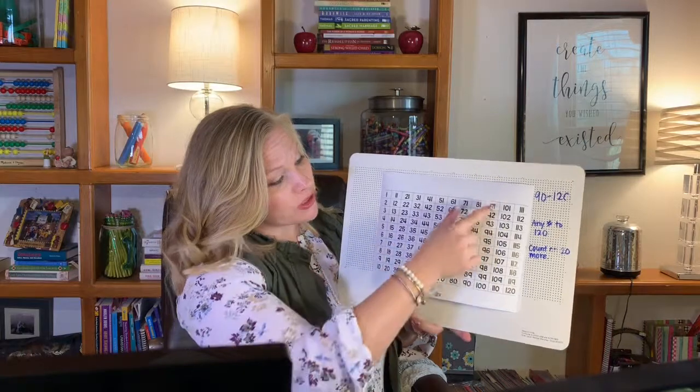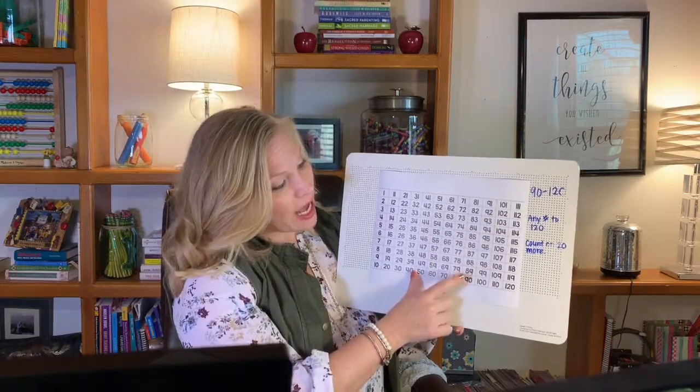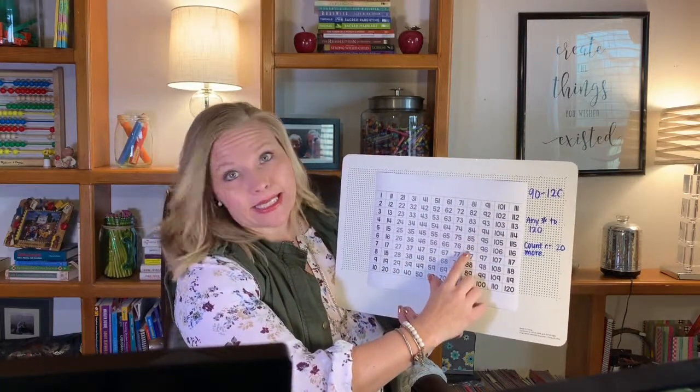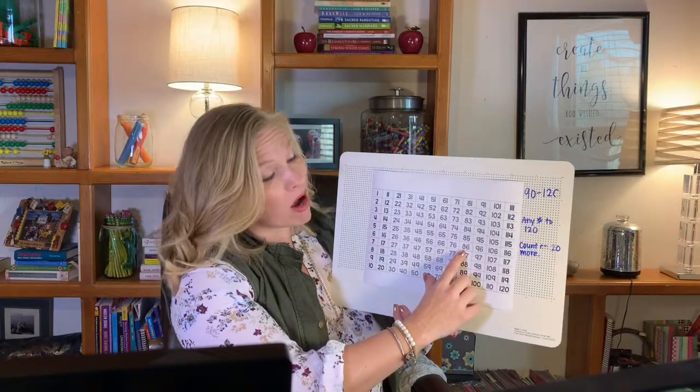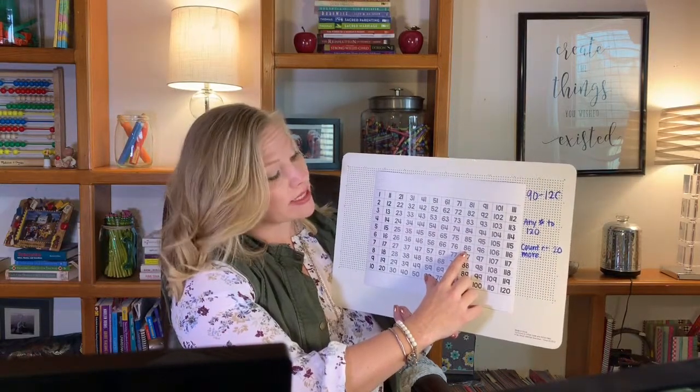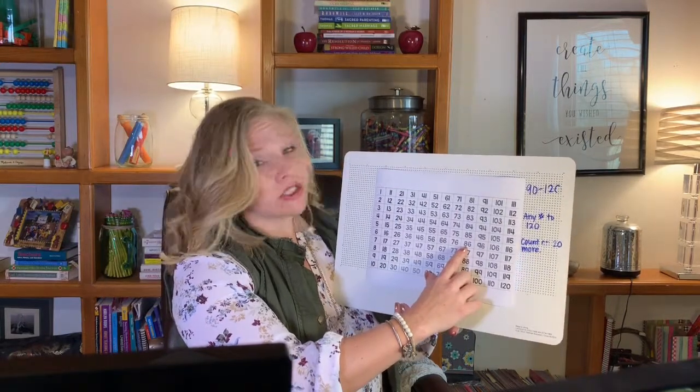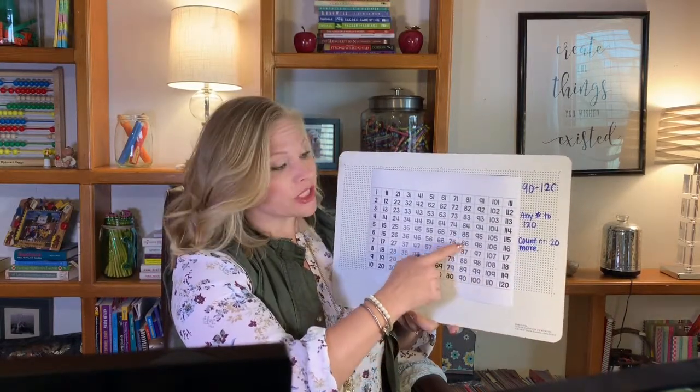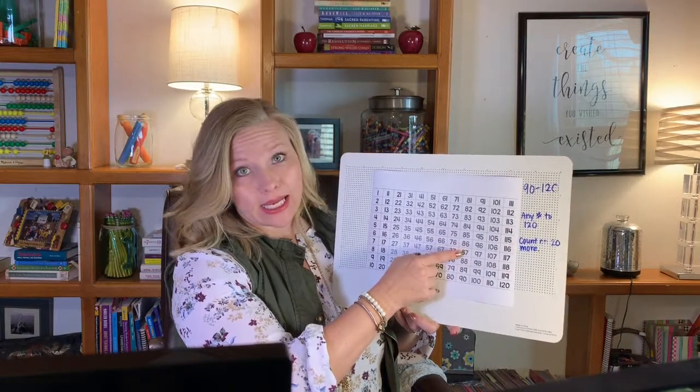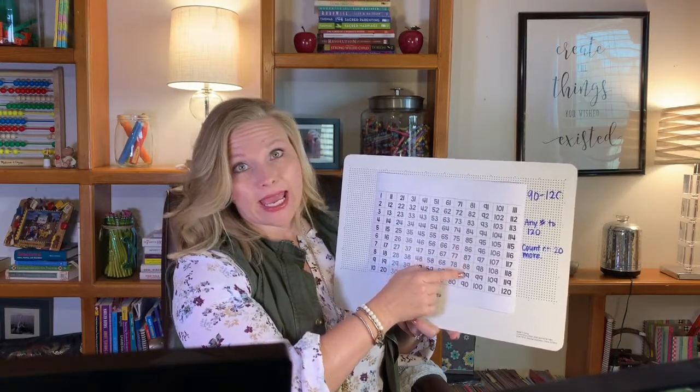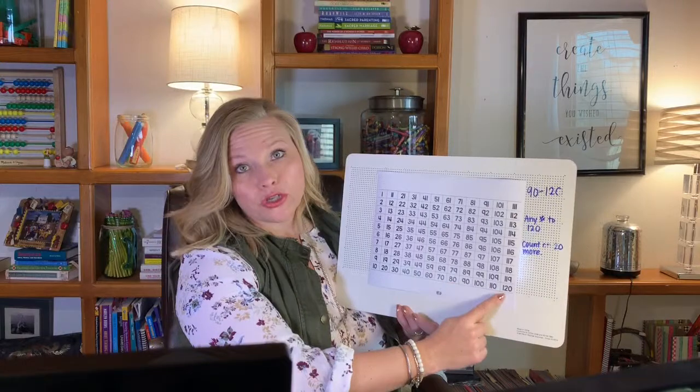The next thing you're going to do is you're going to have the student leader pick any of these numbers. And let's just say they picked 86 and then the class is going to count on from 86. So the student leader might say, boys and girls, our new number is 86. Count to 120. Count with me. And we're just going to count from 86, 87, 88, 89, all the way to 120.